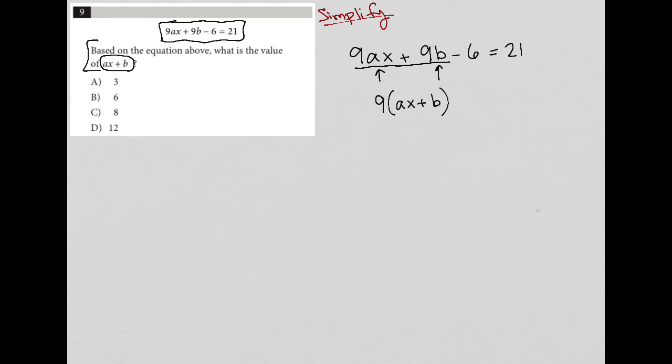Then I'll add 6 to both sides of this equation to get closer to isolating AX + B. I can continue by dividing both sides by 9.